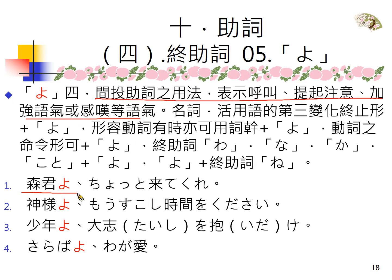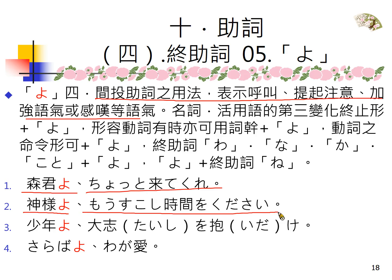好，还有间投助词よ的用法：表示呼叫、提起注意、加强语气或感叹等等的语气。「森くんよ！」，呼叫啦，森君啊！这是男孩子以上对下的叫，或是同学之间女同学叫男同学。「森くんよ、ちょっと来てくれ！」，好，另外也是呼叫——「神よ！もう少し時間をください！」，神啊！请再多给我一点点时间，我还有很多事情要做。「もう少し時間をくれ」。